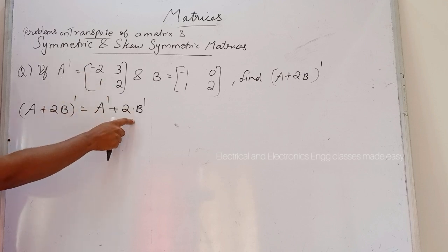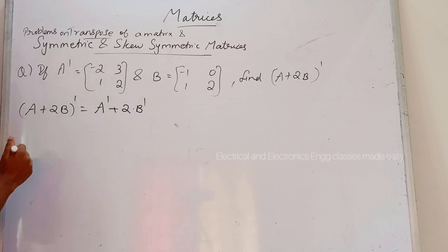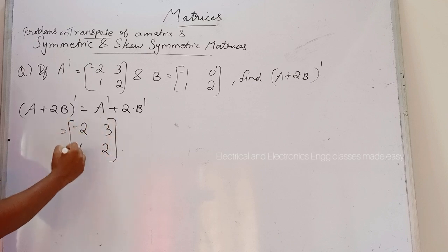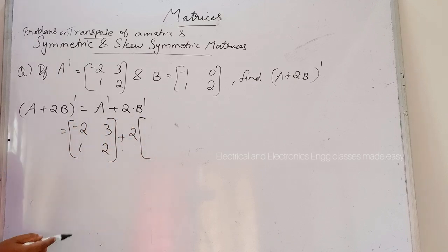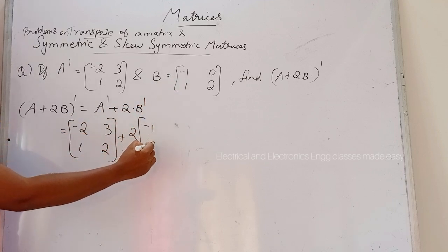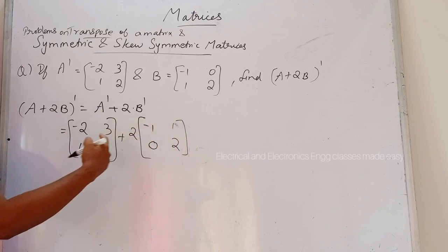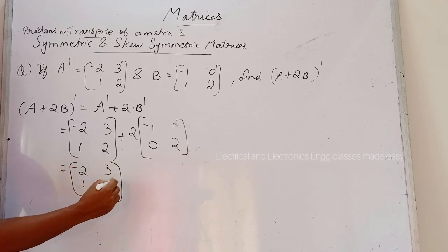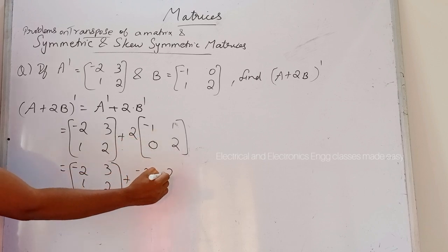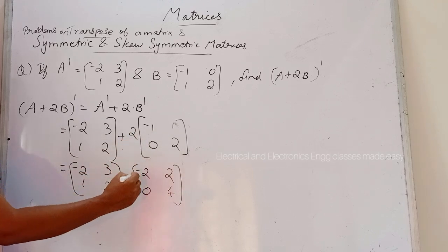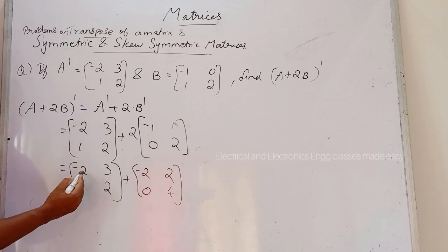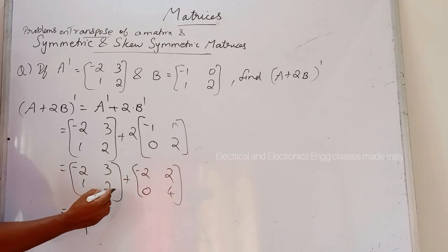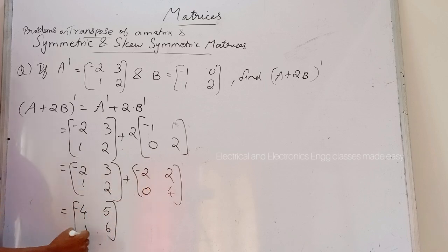So A transpose is given as [-2, 3, 1, 2]. We find B transpose by changing rows into columns, giving [-1, 1, 0, 2]. Multiplying by 2 gives [-2, 2, 0, 4]. Now adding the two matrices: -2 + (-2) = -4, 3 + 2 = 5, 1 + 0 = 1, 2 + 4 = 6. So the answer is [-4, 5, 1, 6].